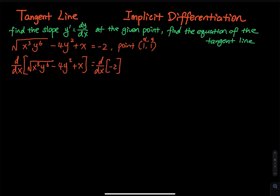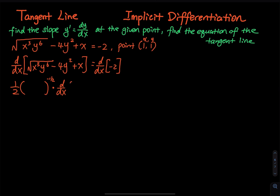For the first term, notice there is an x times y inside a square root, which tells me we need the chain rule. By chain rule, we bring the one-half down and raise whatever is inside to the negative one-half, because one-half minus one is negative one-half. Then we differentiate the inside, which is x³y⁶.